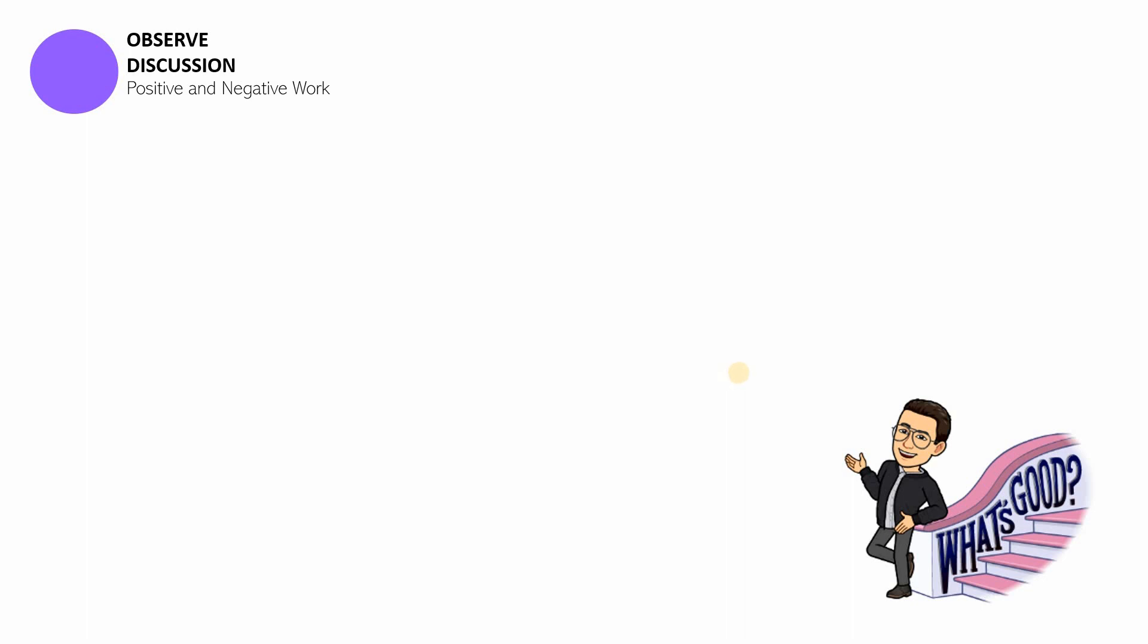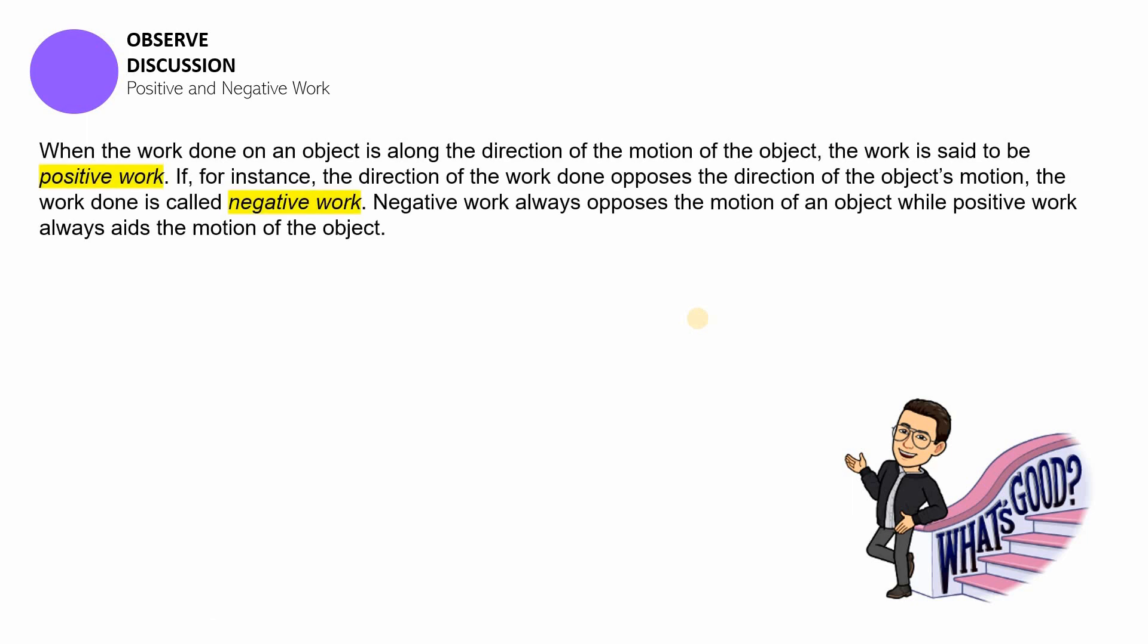If that is so, let's now proceed with the last part of this session which is a discussion about positive and negative work. Work can be positive or negative. What do you think about the reasons why it's going to be positive and why it's going to be negative? Now, when the work done on an object is along the direction of the motion of the object, kapag halimbawa, yung ginawang work sa isang object is pa-forward and yung direction ng motion ng object gumalaw din siya pa-forward, then we can say that the work is positive.